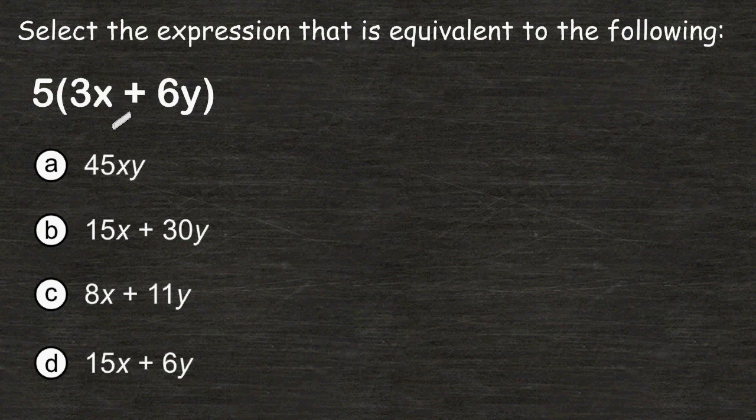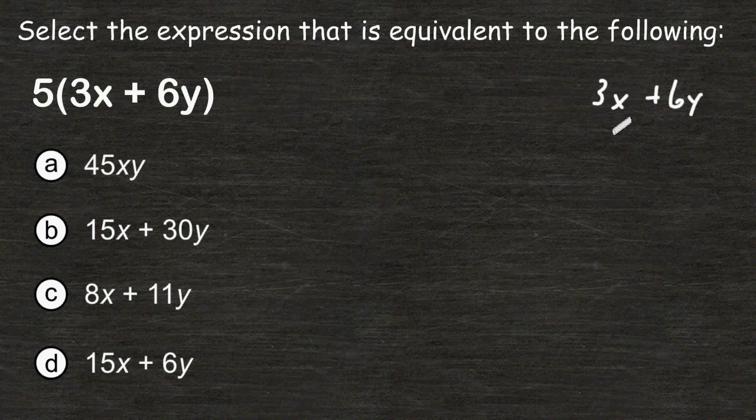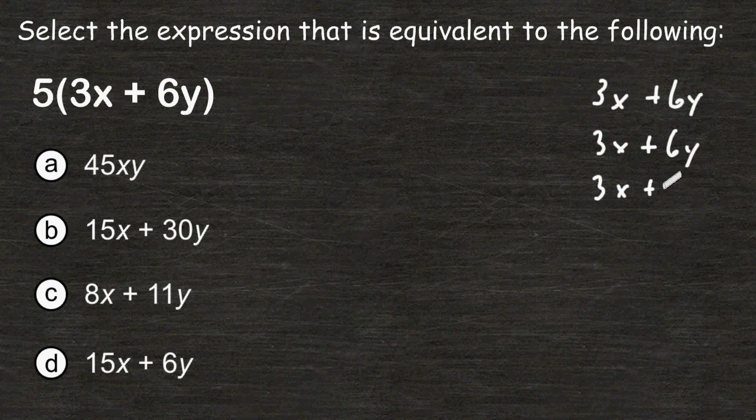Well, one thing we could do is just write 5 sets of 3x plus 6y. But trying to figure out what the equivalent expression is this way would take a bit long. But let's do that anyway just to see what we would come up with. So we're going to write 3x plus 6y a total of 5 times.